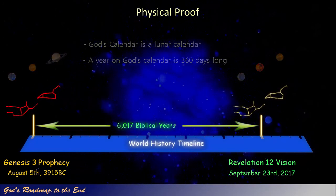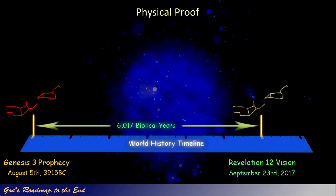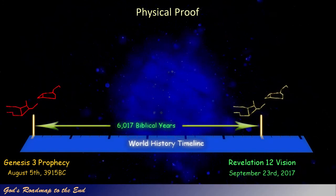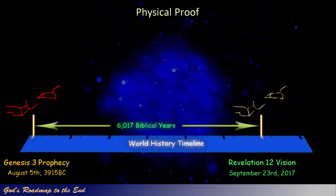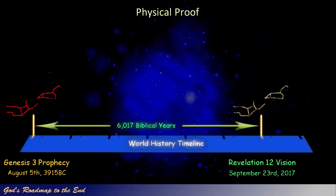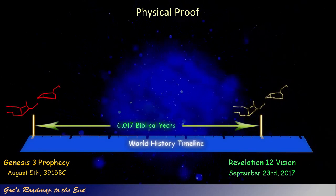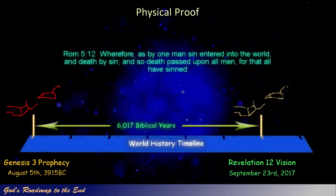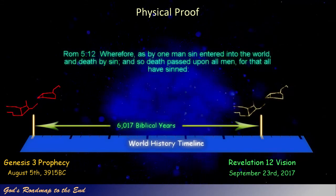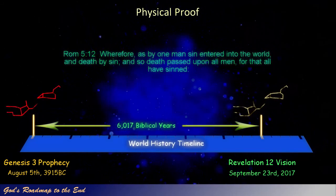We now have two points on this timeline that are approximately 6,000 years apart, describing the time between the prophecy and the vision that Daniel was told to seal up, and marking two very important events in the history of man on earth. We know that at the point that the prophecy was given, sin entered the world and death by sin, as seen in Romans 5. Romans 5 verse 12: 'Wherefore, as by one man sin entered into the world, and death by sin, and so death passed upon all men, for that all have sinned.'